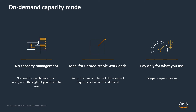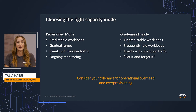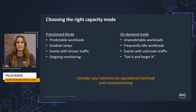So how do you know which mode is right for you? If you choose provisioned mode, you specify the number of reads and writes per second that you require for your application. You can use auto-scaling to adjust your table's provisioned capacity automatically in response to traffic changes. This helps you govern your DynamoDB use to stay at or below a defined request rate in order to obtain cost predictability.